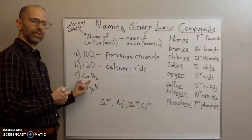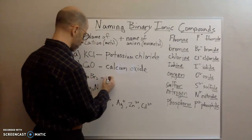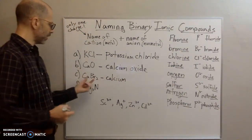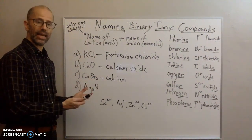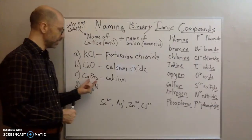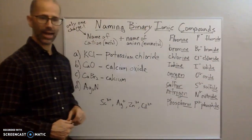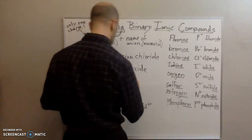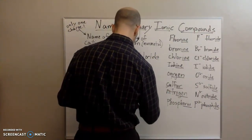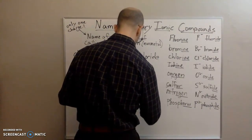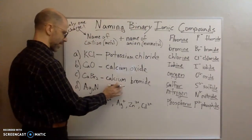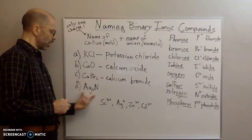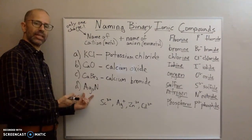For the next example, we again have calcium as the first element, so the first part of the name is 'calcium.' Then we have Br, which is bromine. Drop the '-ine' ending and add '-ide' to get 'bromide.' Put them together: the compound is calcium bromide.